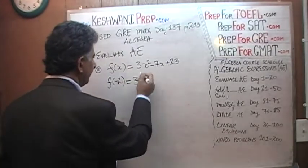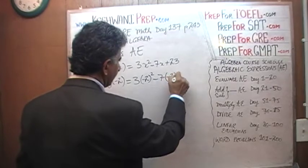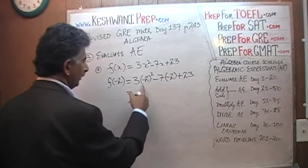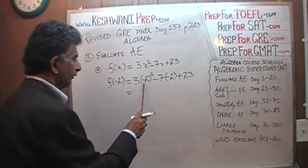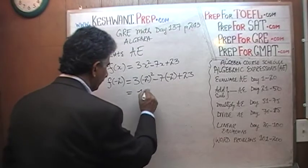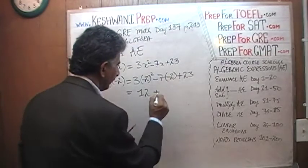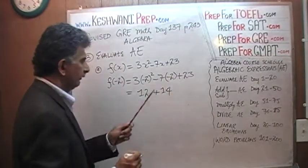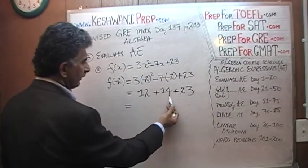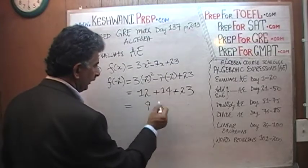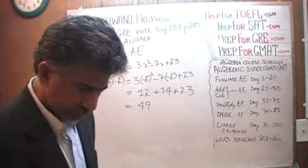f(negative 2) equals 3 times negative 2 squared, minus 7 times negative 2, plus 23. Negative 2 squared is 4, and 4 times 3 is 12. Then negative 7 times negative 2 is positive 14. So we have 12 plus 14 plus 23. That adds up to 49. The answer is 49.